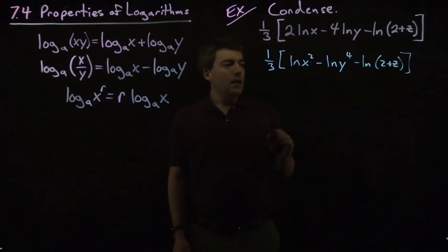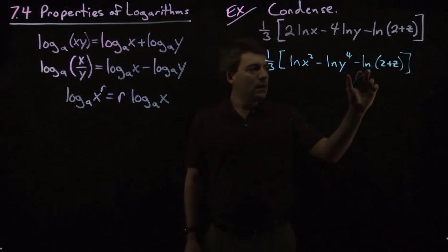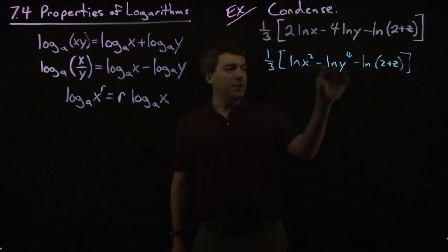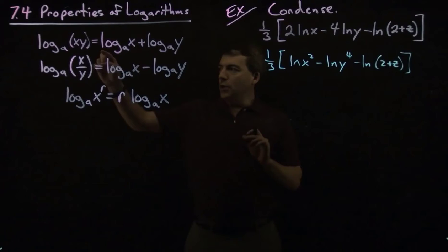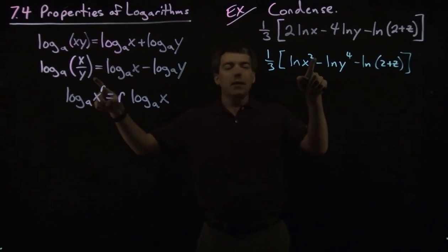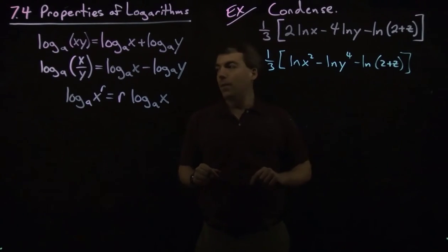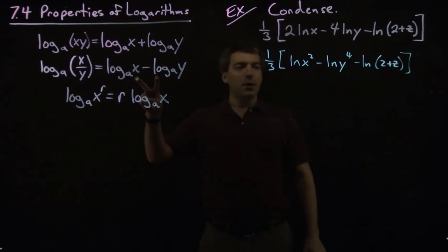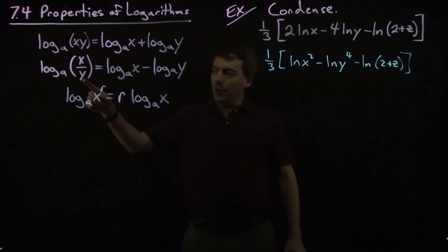Okay, now we have logarithms all by themselves, no coefficients, and so we can use these properties to combine them. So here we have the natural log of x squared, we minus natural log of y to the fourth, so that's this property right here. We can write that as a quotient.